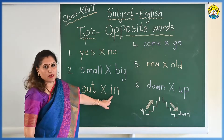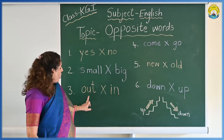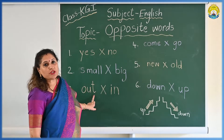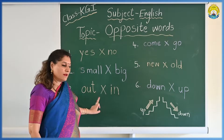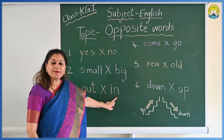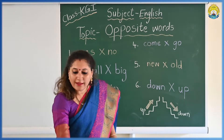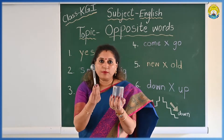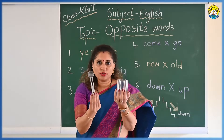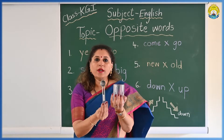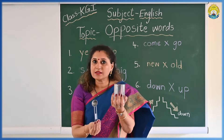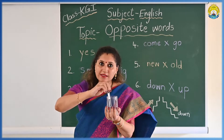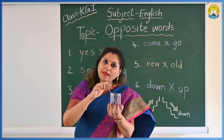Now I am going to explain: out and in. O, U, T — out. And the opposite of out is in. I, N — in. Children, can you see this glass? I am keeping this spoon out — so this is out. The spoon is out of the glass. When I keep this spoon in the glass, the spoon is in the glass.